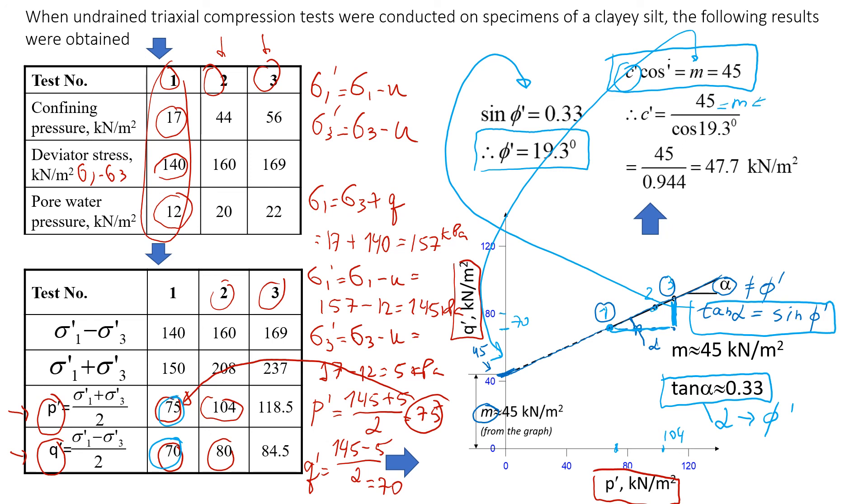We're going to have 45 divided by cosine of 19.3 degrees. That will give us approximately 47.7 kilonewtons per square meter. You will see that value m is close to value of the cohesion, but they're not the same.